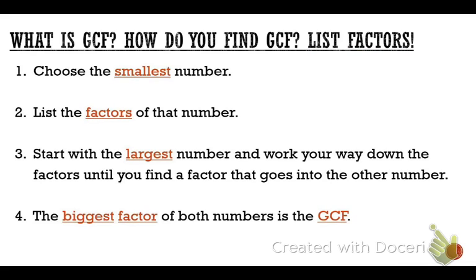There are a few steps to write down with your red pen. Step one: choose the smallest number. Step two: list the factors of that number. Then start with the largest factor and work your way down until you find a factor that goes into the other number. The biggest factor of both numbers will be your GCF.